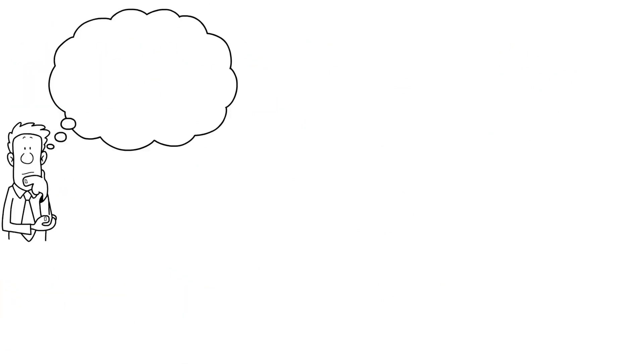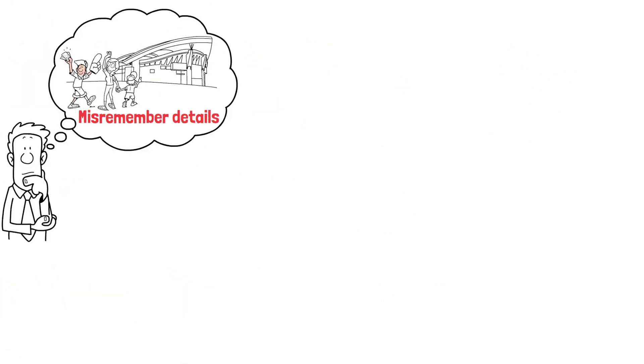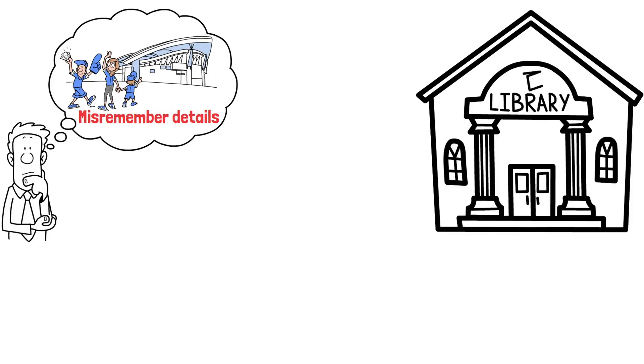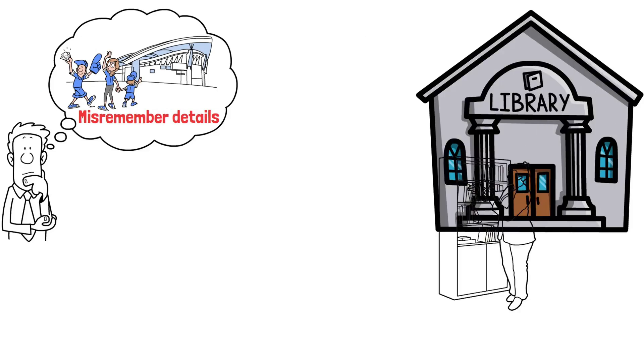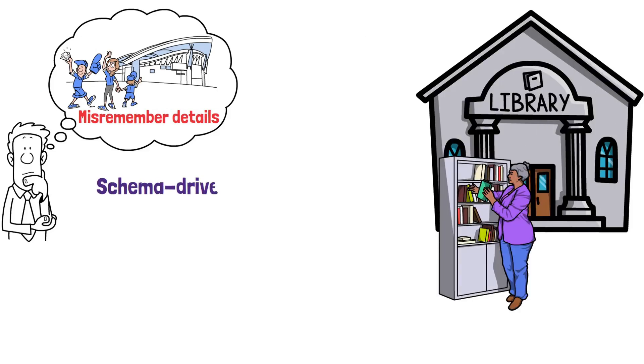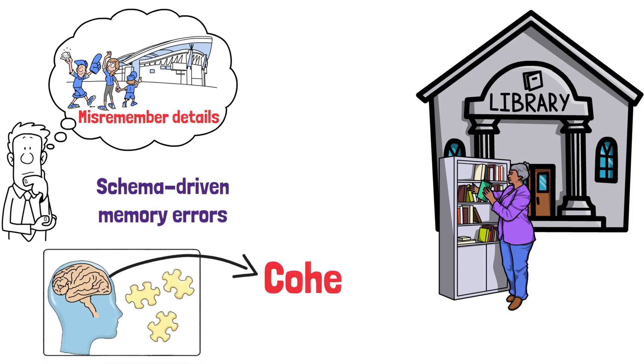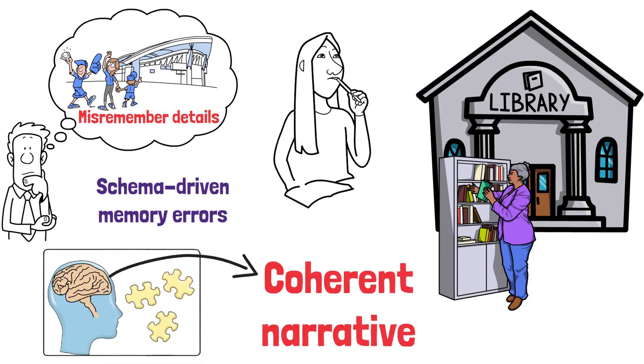For example, individuals may misremember details of an event to fit their schemas, such as recalling a library setting as silent, even if it wasn't. Schema-driven memory errors highlight the reconstructive nature of memory, where the brain builds a coherent narrative rather than recalling precise details.